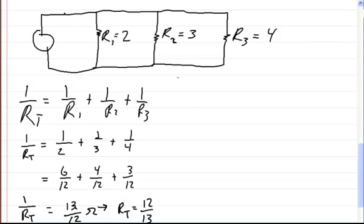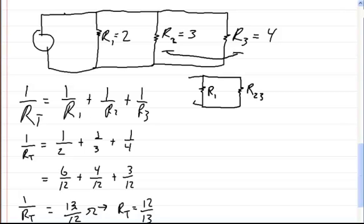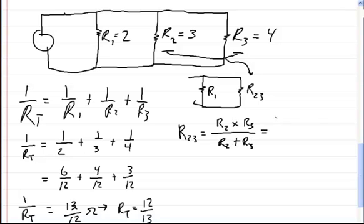You can also do this problem differently by combining R2 and R3 to simplify the circuit. So R2,3 equals R2 times R3 divided by R2 plus R3. That's 3 times 4 over 3 plus 4, which gives you 12 over 7 ohms. So R2,3 equals 12 over 7 ohms.